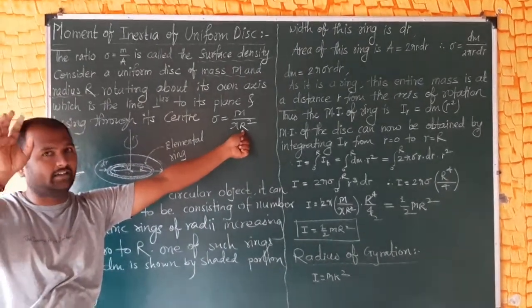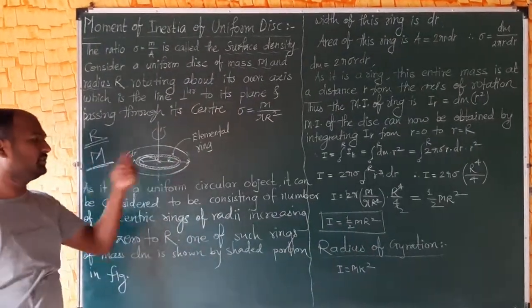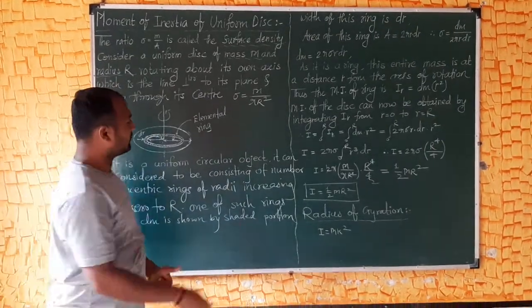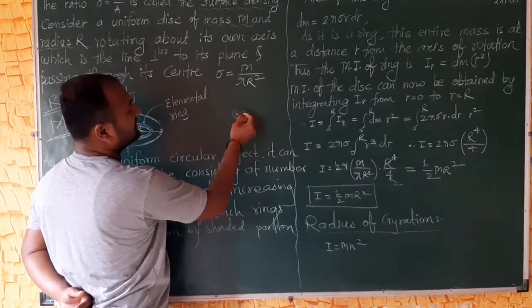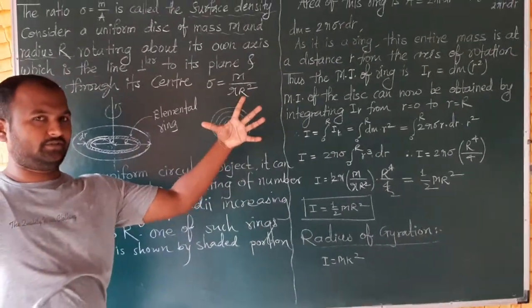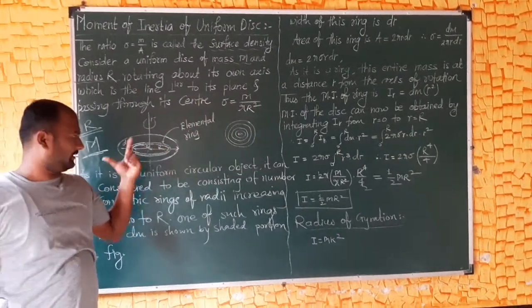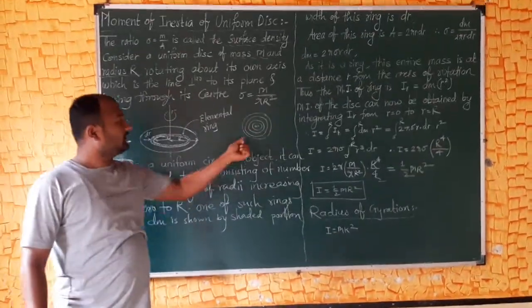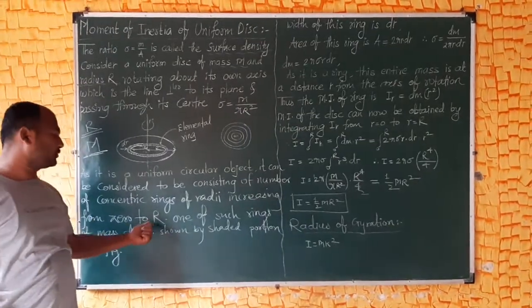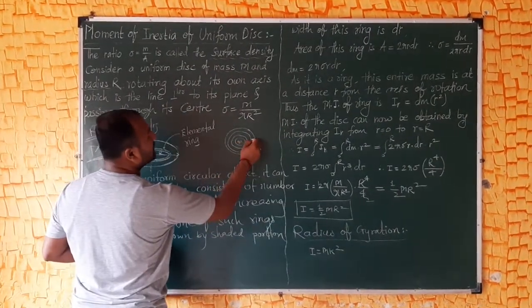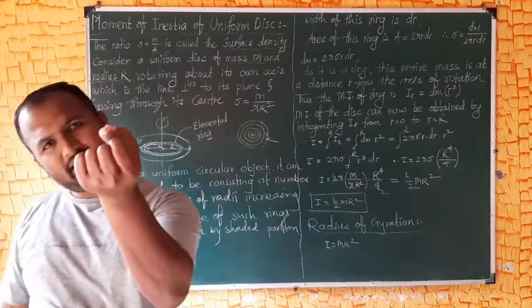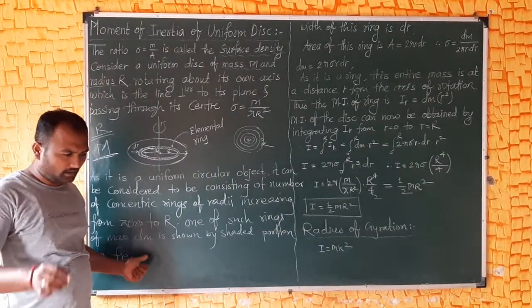As it is a uniform circular object, it can be considered to be consisting of a number of concentric rings. You can see the front view and side view. The number of these rings have radii increasing from 0 to R.